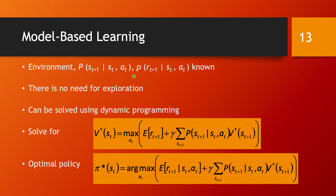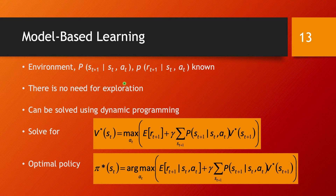We also know the reward, and I'm going to explain this in a slightly more general way than in a previous lecture. Previously we said there is a fixed reward if you are in state S_T and take action A_T. But here, there is a set of different rewards you can get in this state with that action, and we know the probability distribution over all these reward values. So the environment is completely known via these probability distributions, and there is no need for exploration — we already have these values.